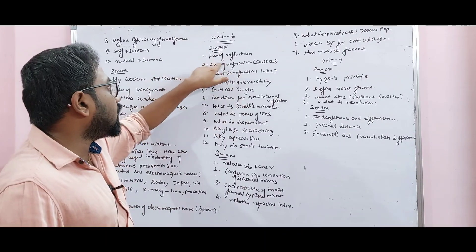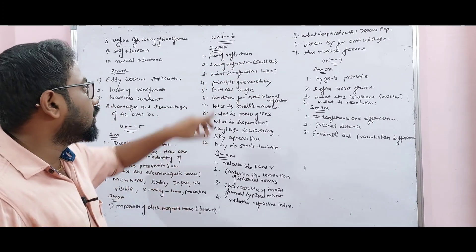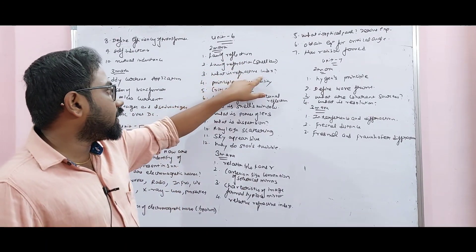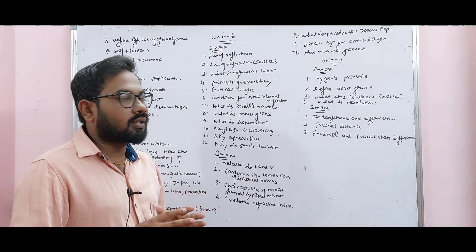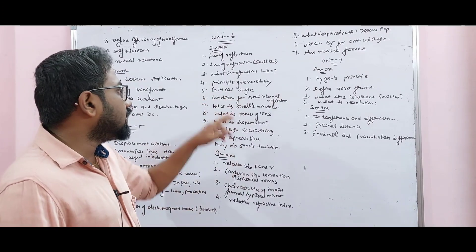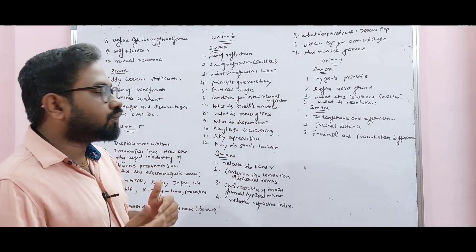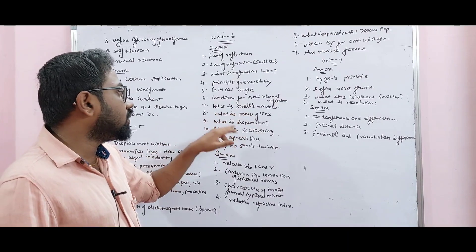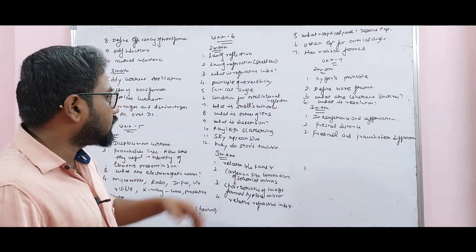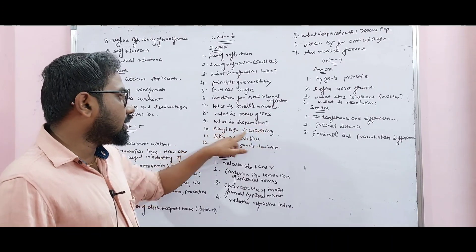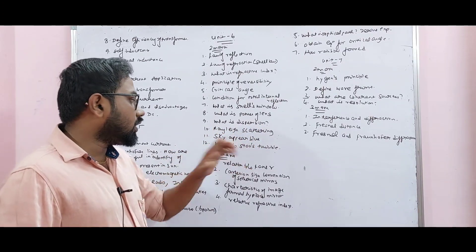Unit 6 optics: Law of reflection, law of refraction, Snell's law. What is refractive index? Principle of reversibility — very easy. Critical angle, condition for total internal reflection. What is Nell's window? What is power of lens? P = 1/f. What is dispersion? Rayleigh scattering, why does the sky appear blue? Why do stars twinkle?